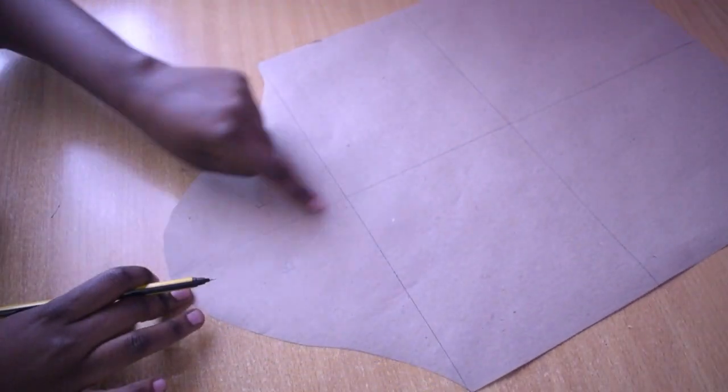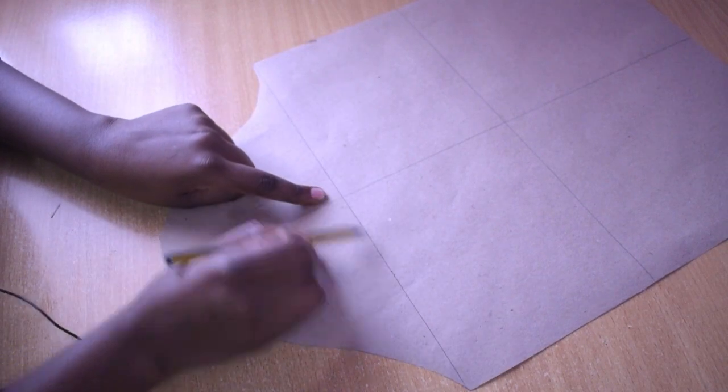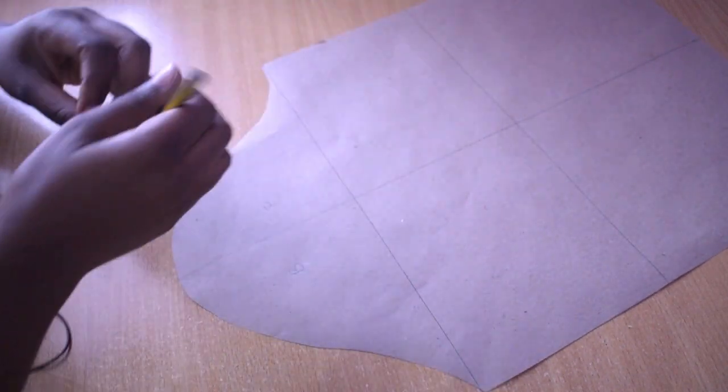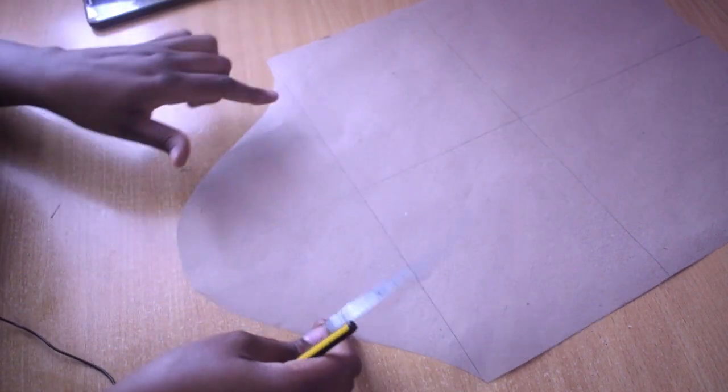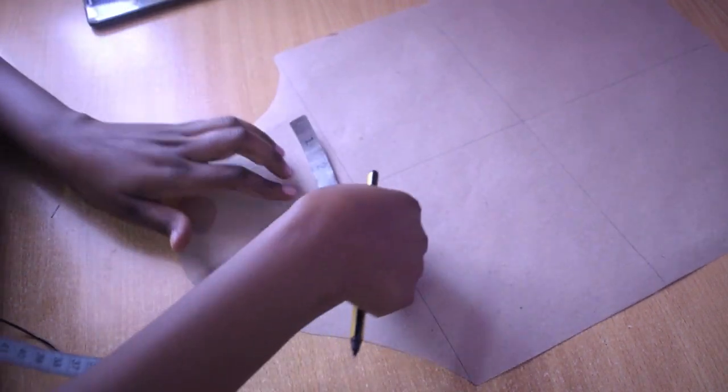You'll open up this part, and from here you open here and here. But before we do that, we will make lines, straight lines, equal from here like this.